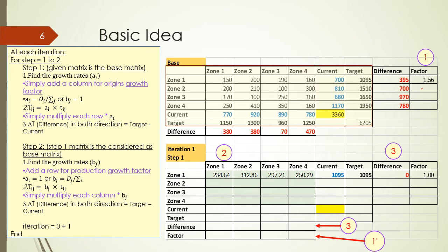This is origin-based. What we have done in the base is an origin-based iteration. In step one, we consider our origin-based matrix and multiply it by the factor to get our new base matrix. For example, 234.64 is obtained by multiplying 150 by its growth factor of 1.56, and so on for the next cells. This time we calculate the difference and factor considering the destination, so it is destination-based — this is iteration one, step one.